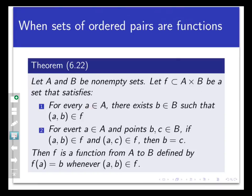First of all, for every a in A, there exists a b in B such that (a,b) belongs to F. And secondly, for every a in A and points b, c in B, if (a,b) is in F and (a,c) is in F, then b equals c. C is another element of B, by the way.